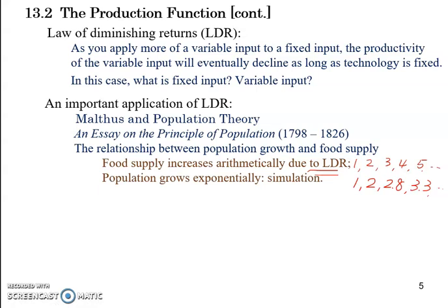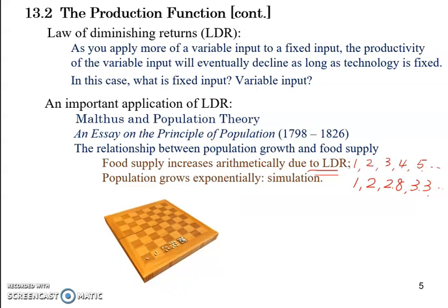If this were a traditional face-to-face class, I would pull up a computer simulation showing a fish tank and how fast fish can grow. But because of technical restrictions here, we can use another interesting example from history to show how quickly population can grow. In Indian history, there was a king who really liked a handmade chessboard.